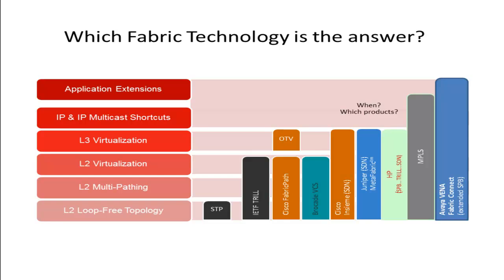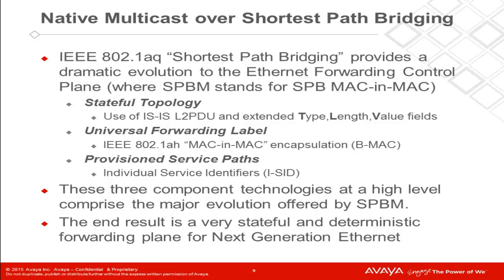So what is it about Shortest Path Bridging that makes it so superior? The technology can be broken down into three major components. First, the fabric works on a stateful topology, and this topology is supported by ISIS, which is a very extensible protocol that works on the use of type length value fields, or TLVs. RFC 6329 provides for the required TLVs to support IEEE 802.1aq, and IETF Draft Unbehagen provides for the TLVs to support L3 virtualization, or IP shortcuts, as well as L3 IP VPNs. Recent research and development has also resulted in the creation of new TLVs to support the end-to-end fabric for IP multicast.